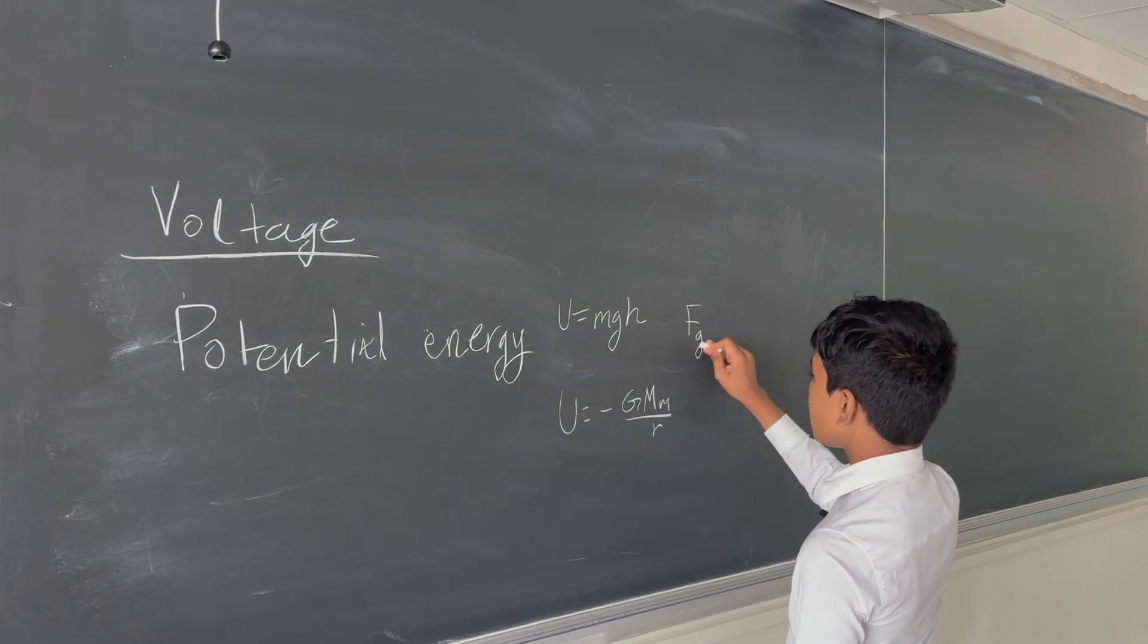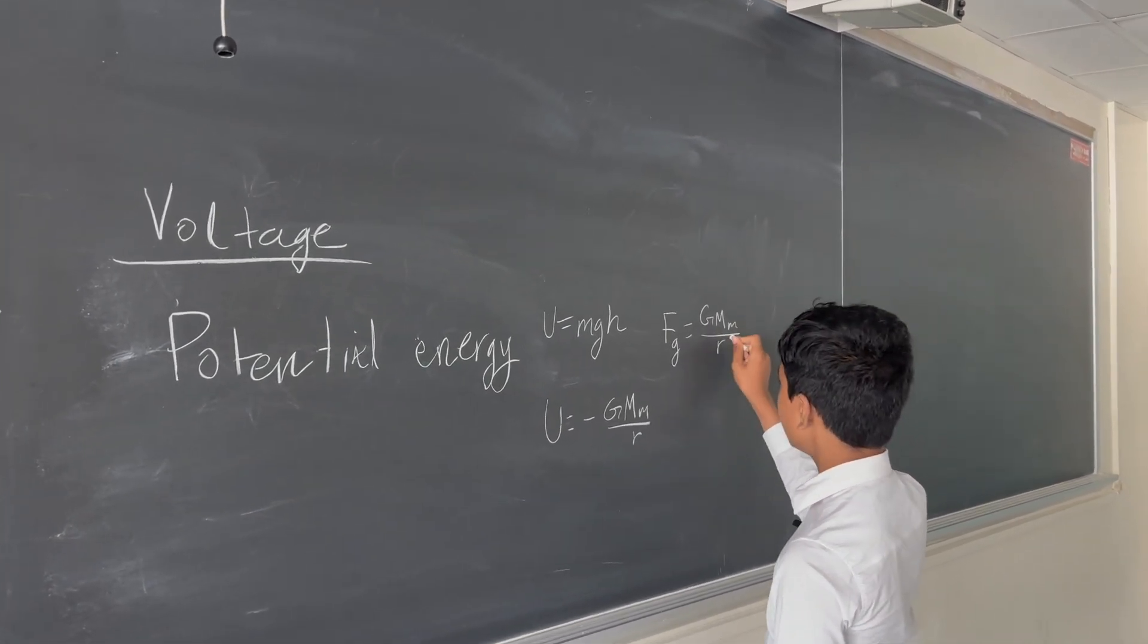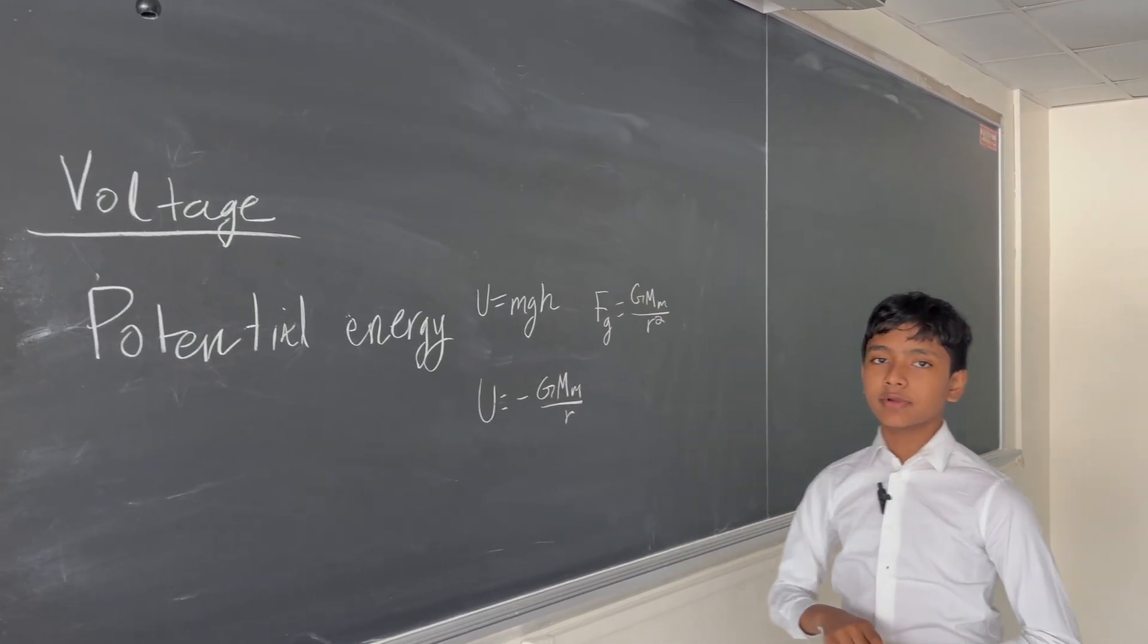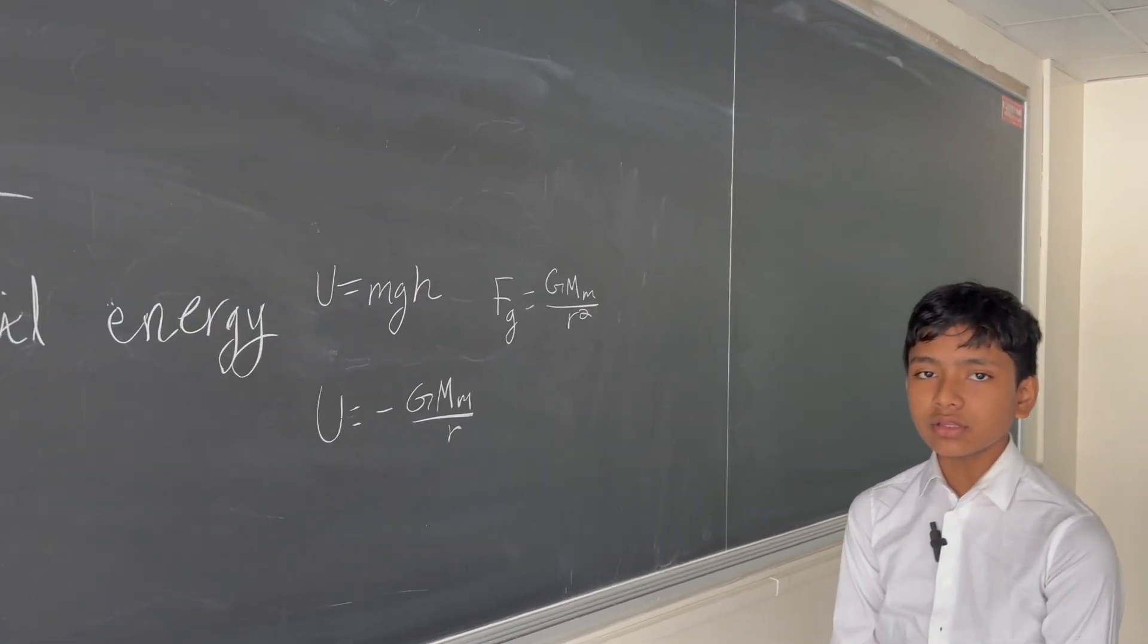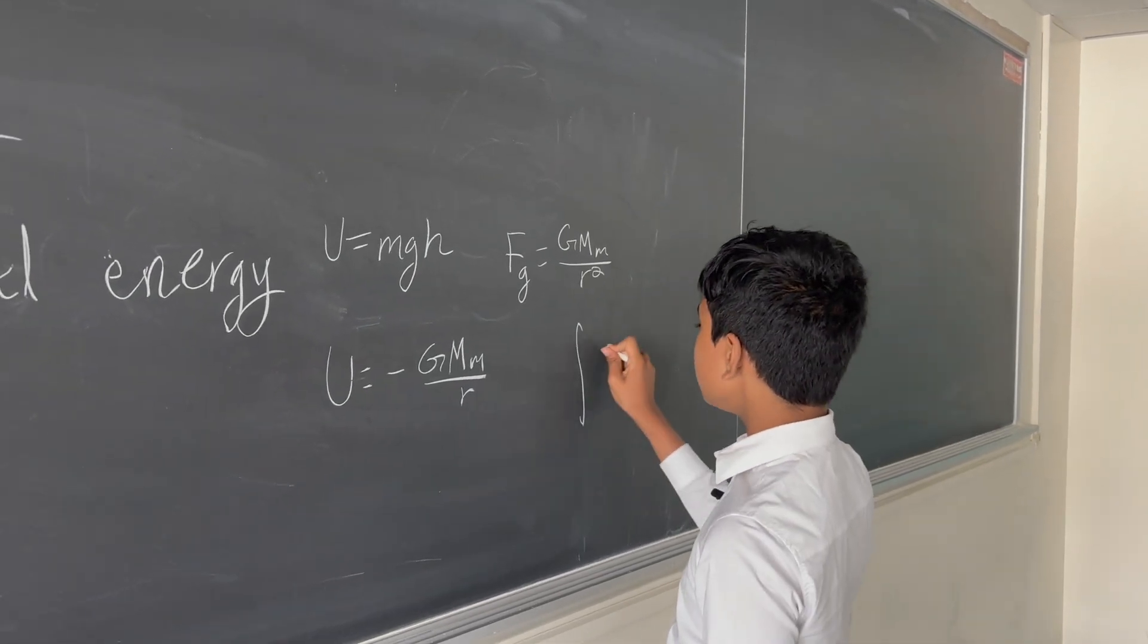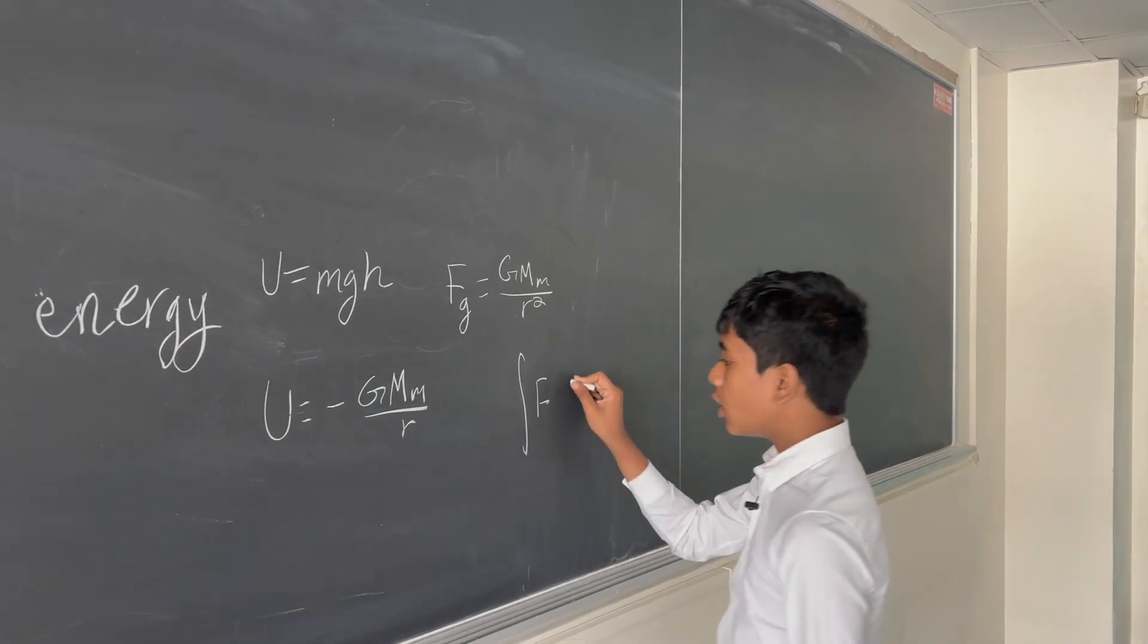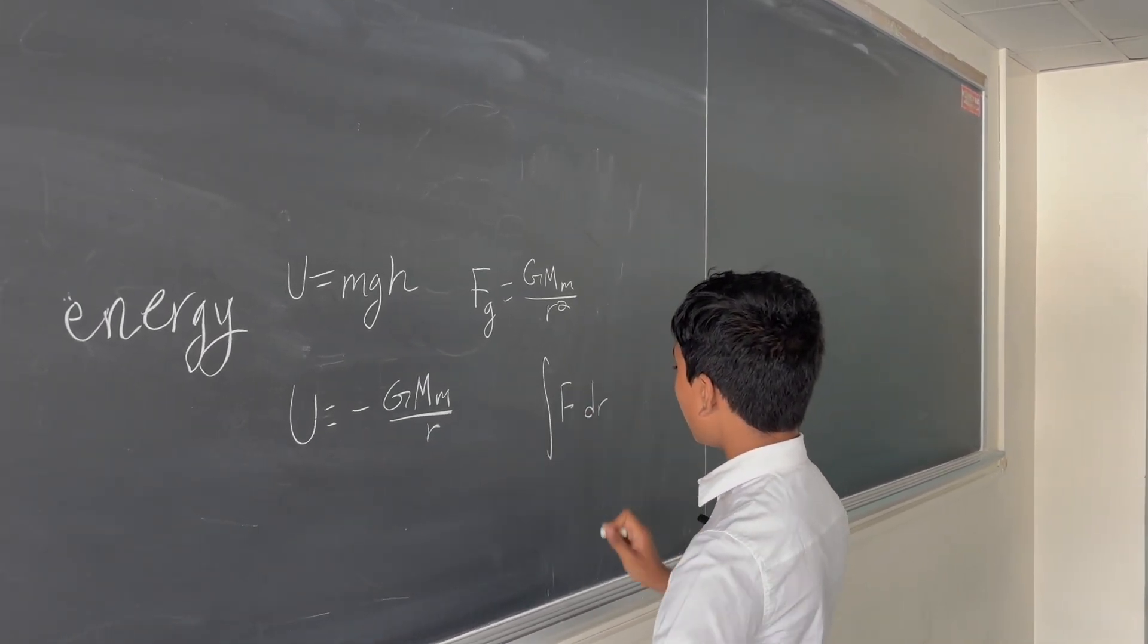Remember that the gravitational force, according to Newton's laws of gravity, is GMm over r squared. The potential energy of an object is essentially defined as the integral of the force exerted by moving that object over the distance that the object traveled.